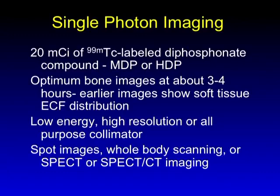Single photon bone scanning — I'm going to talk about PET at the end — is done with a technetium-labeled diphosphonate compound, MDP or HDP. The key understanding is that when you inject the tracer, bone uptake is fairly quick, but most of the tracer never goes into the bones. It stays in the soft tissues and has to be excreted by the kidneys, so you have to wait for soft tissue clearance. Usually around three hours is the optimum time to image.